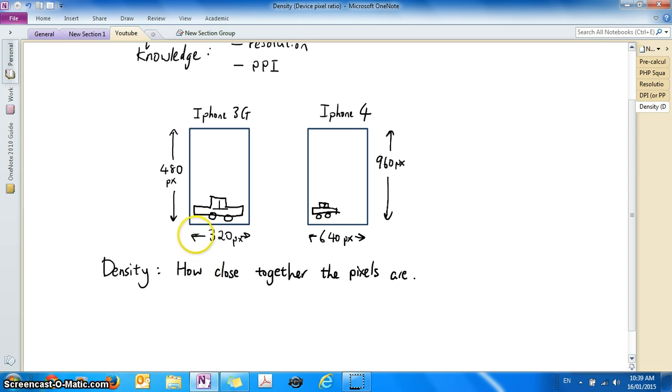So when the density, when the screen width is 320 pixels, alright, both of these screens are exactly the same size. So across the diagonal it's 3.5 inches. Alright, and it's the same with the iPhone 4. 3.5 inch.